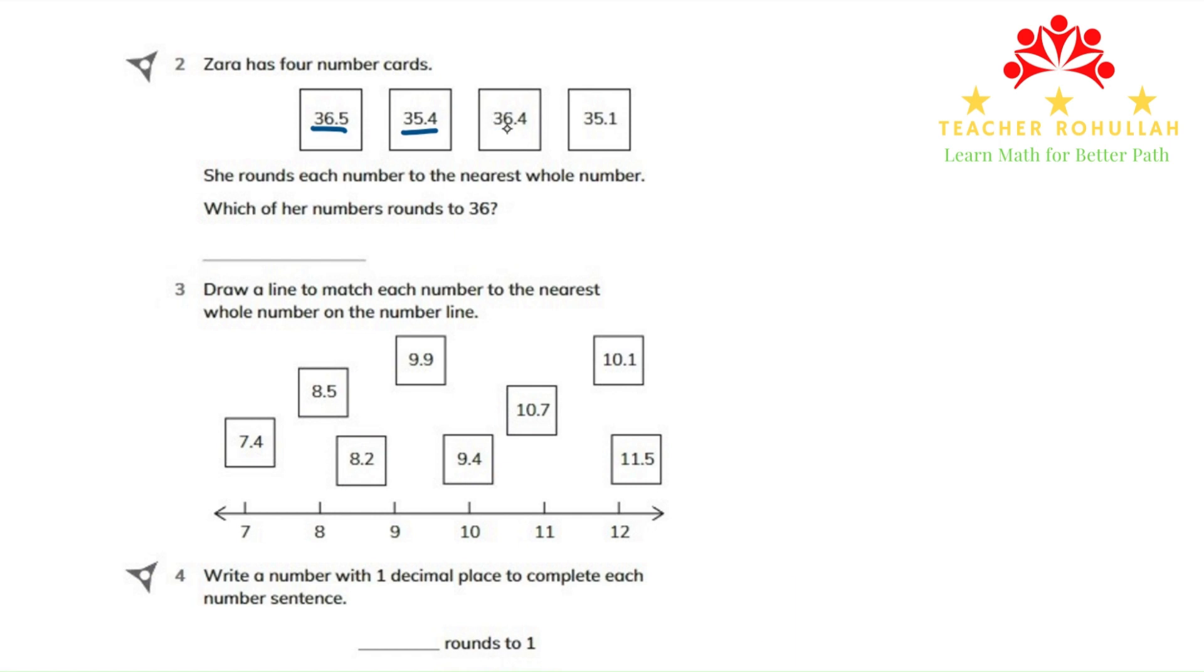And 36.4 rounds to 36 because 4 in the tenth place shows that it is 4 or less. So when it's 4 or less, we round down. And the last one is 35.1 which will also round to 35.